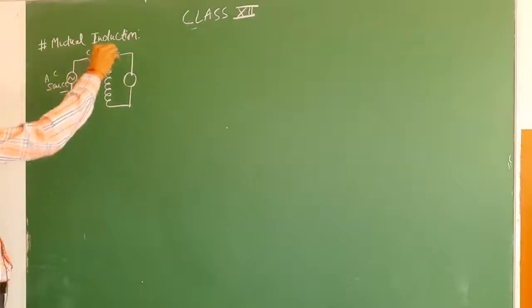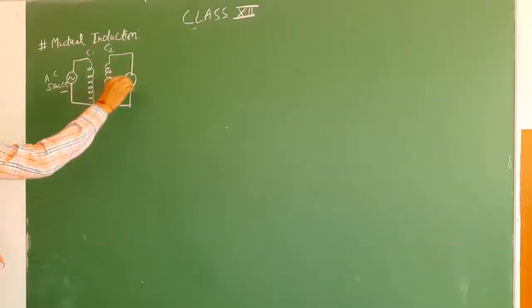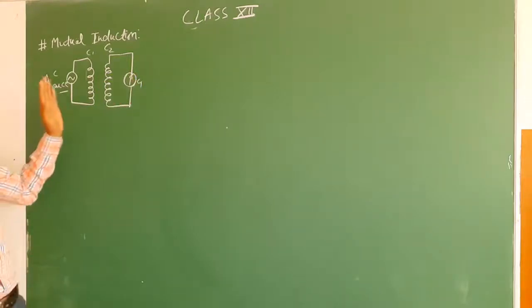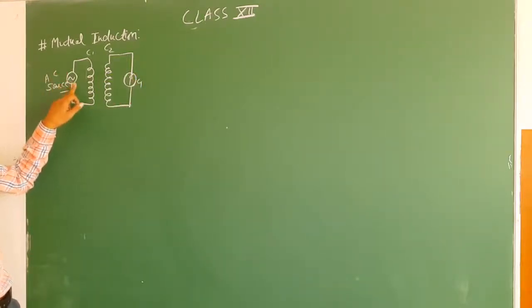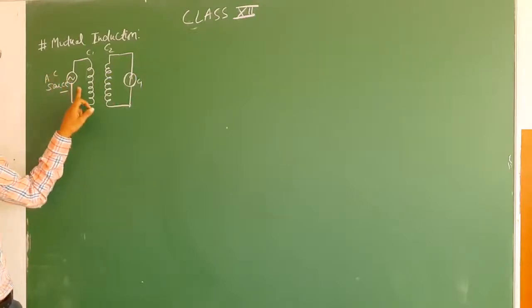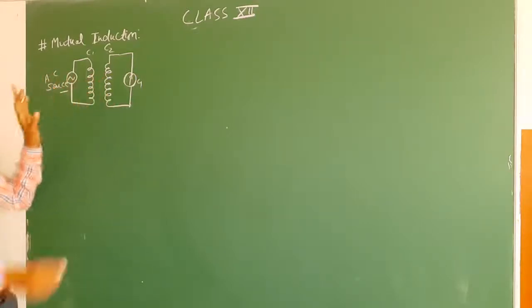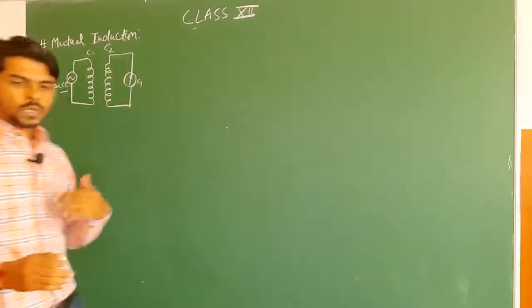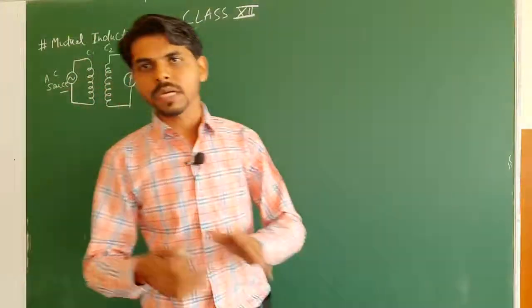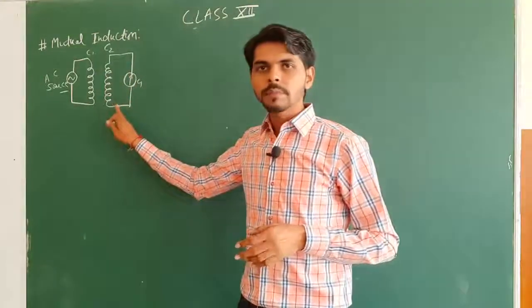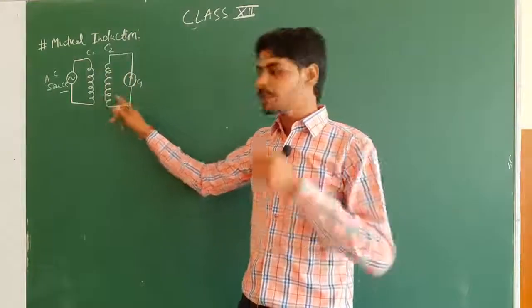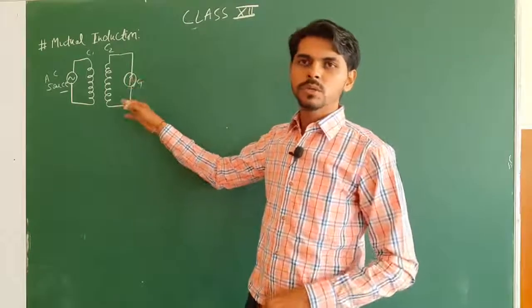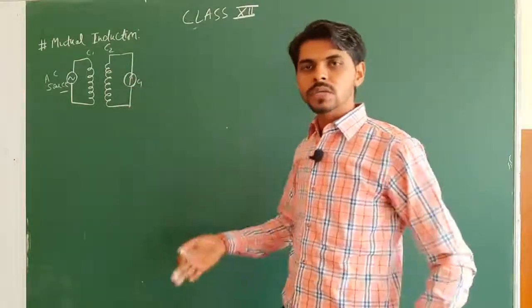One coil is connected with an AC source, and the second one is connected with a galvanometer. Right now the galvanometer gives no deflection. If there is changing current in the first coil, magnetic field will change, magnetic flux will change. The magnetic flux change will be linked to the neighboring (second) coil, and there will be induced EMF in the second coil — that is called mutual induction.